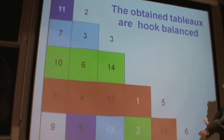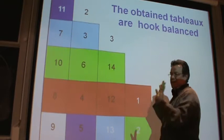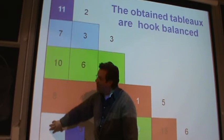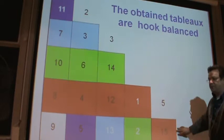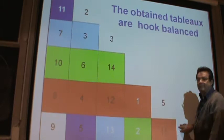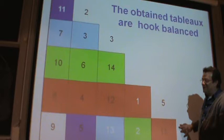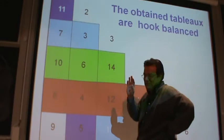I have put some columns for you, but the numbers are the same as before. What is a hook? Pick an entry, look at the column above, and look at the row to the right. So the hook for this entry is that L-shape. Is it clear what the hook is?